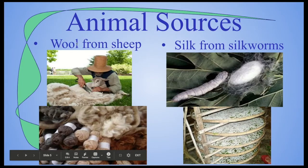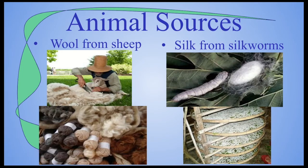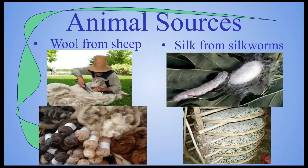Our two animal sources are wool from sheep — they can also come from rabbits, llamas, alpacas, and all sorts of other locations. Silk comes from silkworms; it's those little fibers that they spin to make their cocoons. We just take apart their cocoons to have the silk for ourselves.